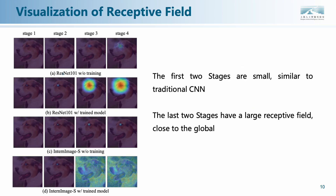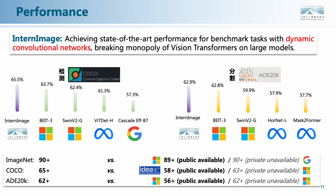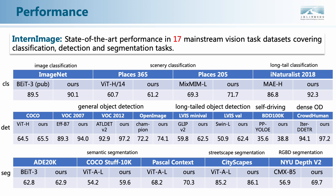We visualize the receptive fields for each stage. The figure shows that the receptive fields in the first two stages are similar to ResNet, but in the last two stages are able to cover the global. We conducted experiments on three mainstream vision tasks, namely ImageNet image classification, COCO object detection, and ADE20K semantic segmentation. InternImage achieves state-of-the-art performance with dynamic convolutional networks, breaking the monopoly of vision transformers on large models. It is worth noting that our training pipeline uses only publicly available data. We performed extensive experiments on mainstream vision tasks, and the results show that InternImage achieves state-of-the-art performance in 17 task datasets.